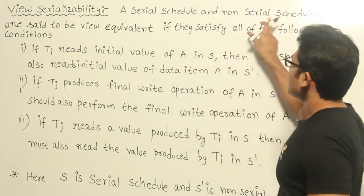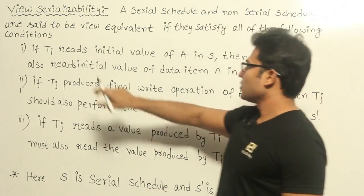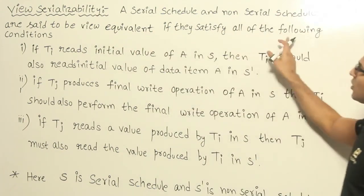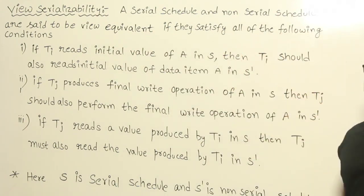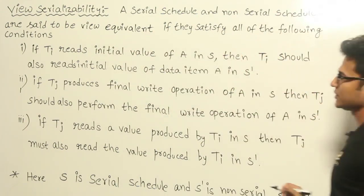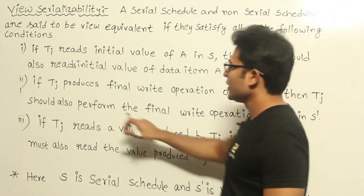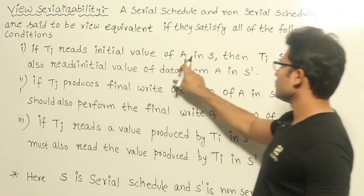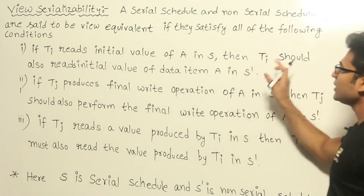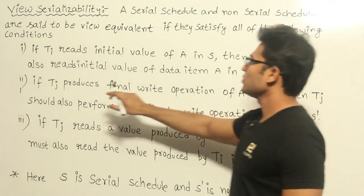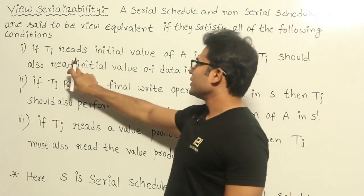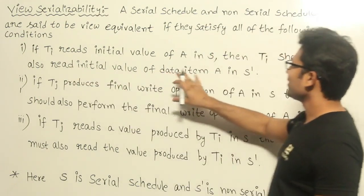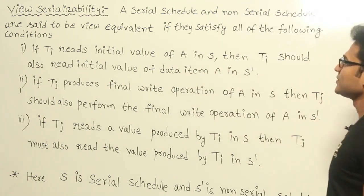A serial schedule and a non-serial schedule are said to be view equivalent if they satisfy all the following conditions. There are three conditions. The first condition is: if TI reads the initial value of A in schedule S, then TI should also read the initial value of data item A in S dash.